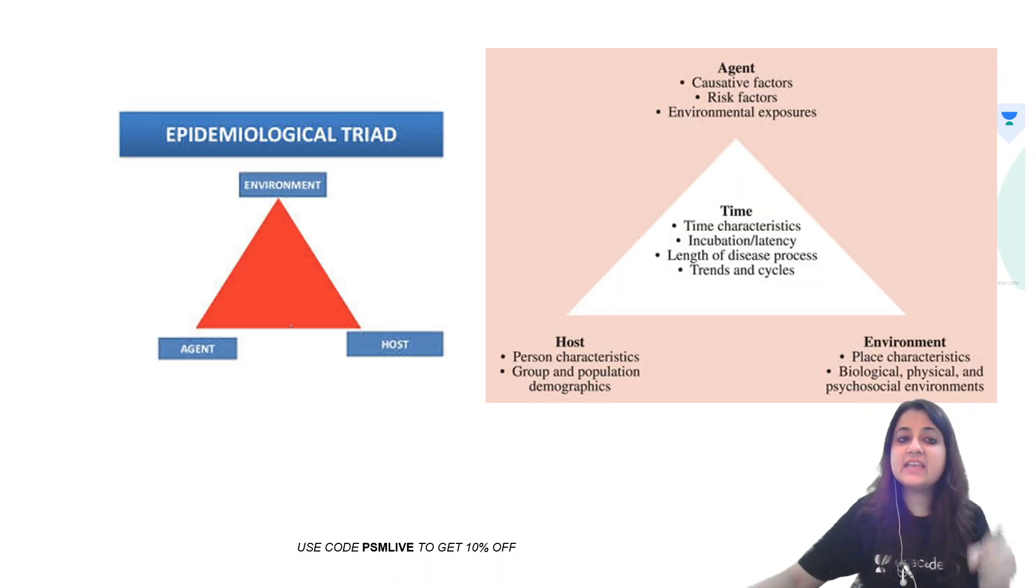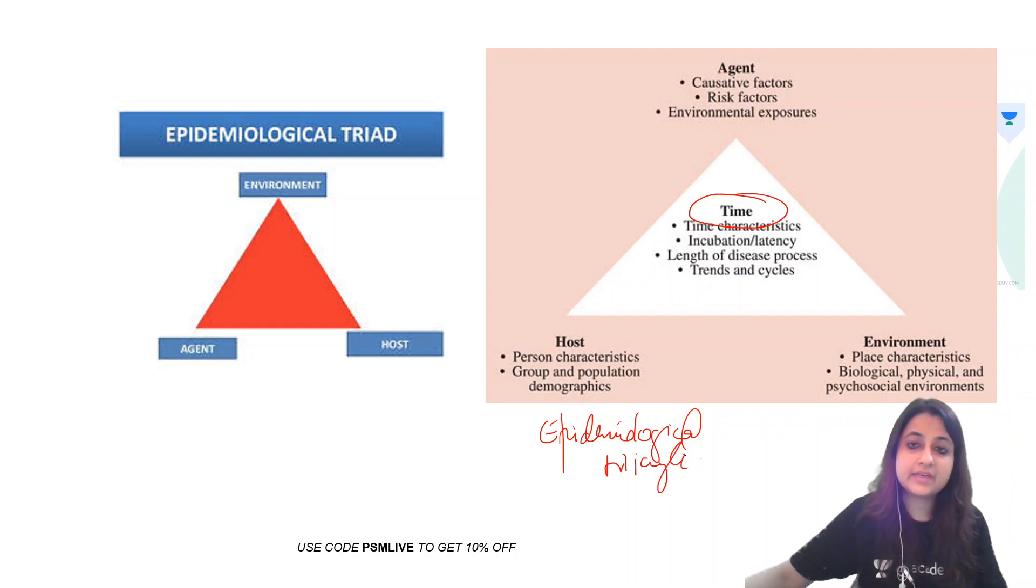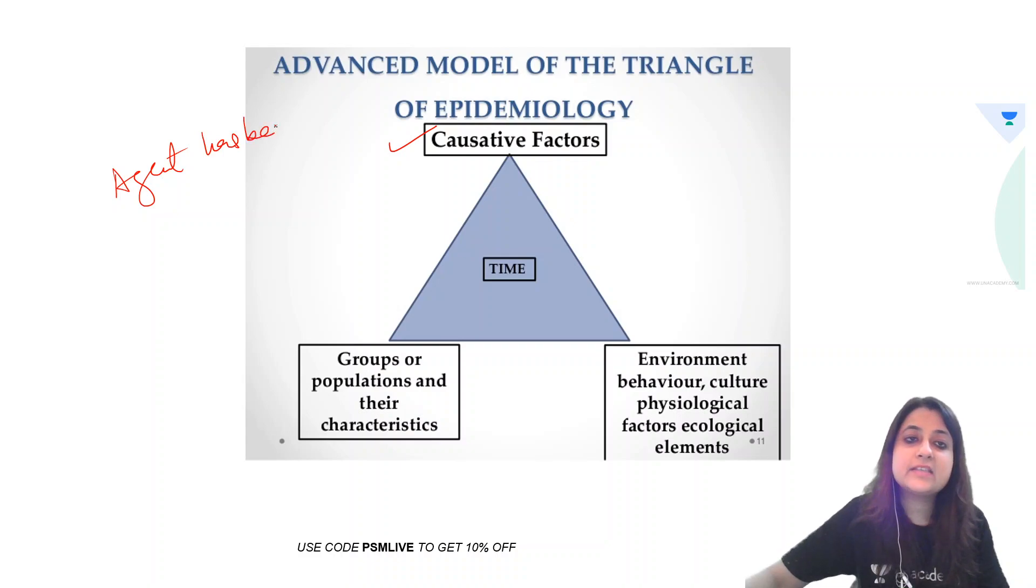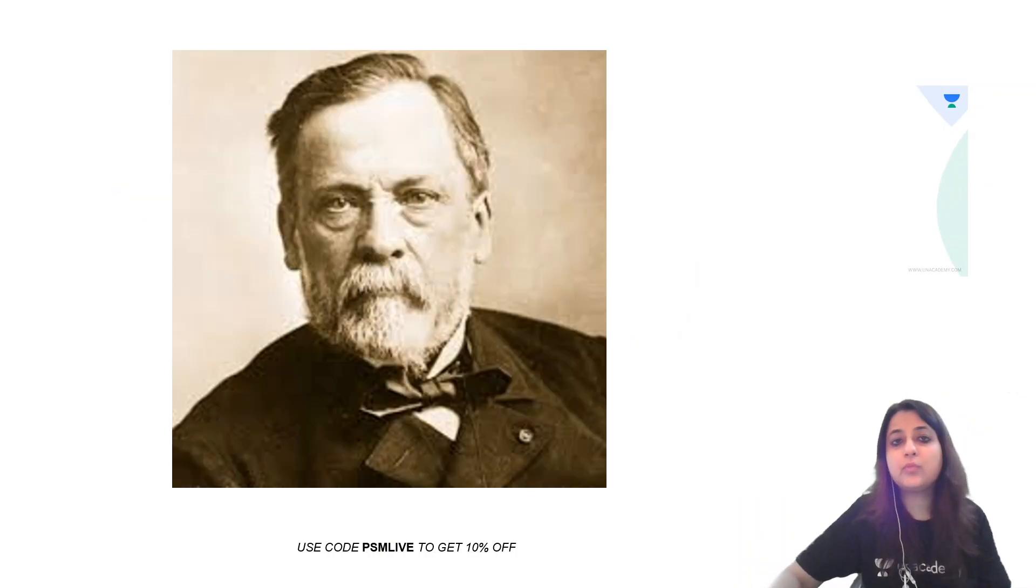This is triad - interaction and interdependence between agent, host, and environment. If you include time over here, this becomes epidemiological triangle with the time included. And this one, a very important advanced model of triangle of epidemiology in which agent has been replaced by causative factors. So these were the various theories of disease causation with the images.